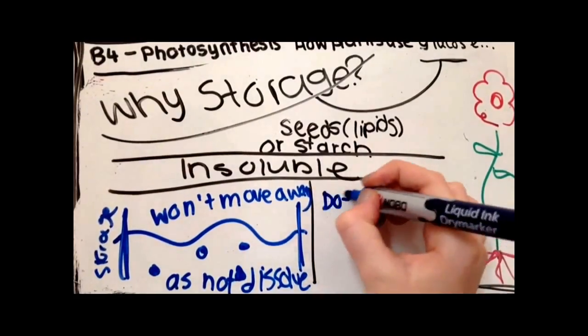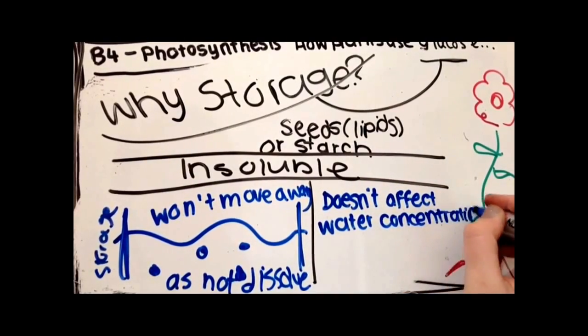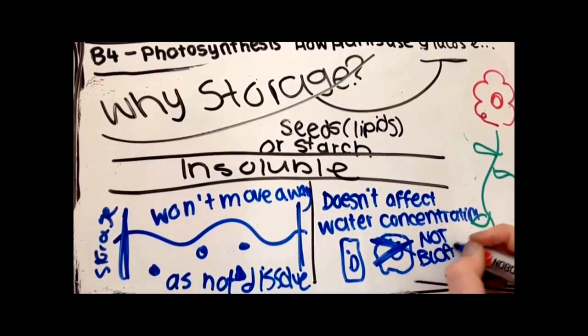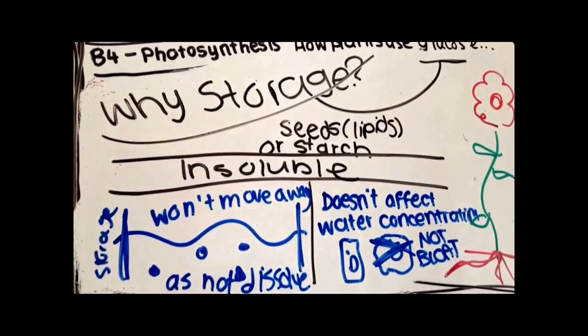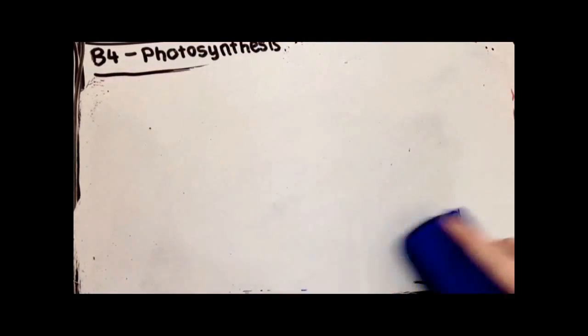And another reason starch is good for storing is because it doesn't affect the water concentration inside cells. Soluble substances would bloat the storage cells by drawing in water. However, starch does not affect the water concentration as it is insoluble.